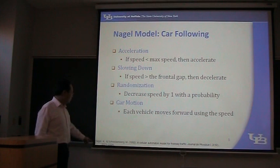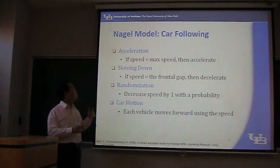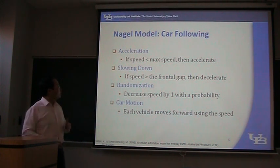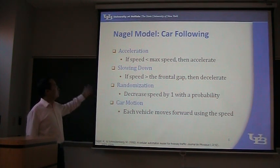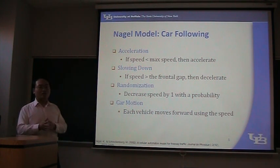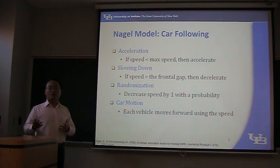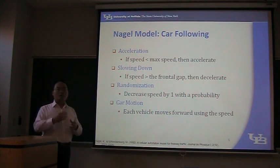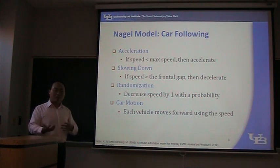In the 1990s, Kai Nagel was the first person to propose the cellular automata model. The car-following procedure is very simple — it has only four procedures. The first is acceleration: if the current speed of the vehicle is less than the maximum speed, you will accelerate. For acceleration, the speed will increase by one. So if currently the speed is three cells per hour and that is less than the maximum speed, then in the next time step the speed will be four cells per hour.